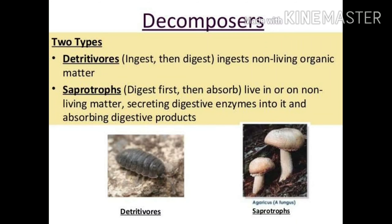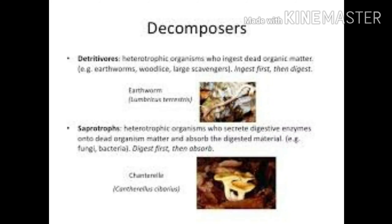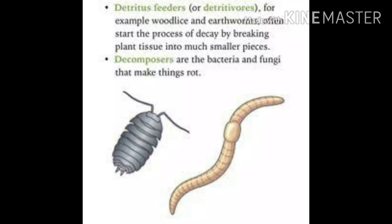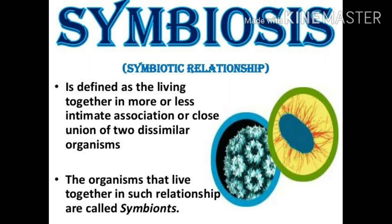Next are the decomposers, which are of two types: saprotrophs and detritivores. Organisms that feed on detritus and decomposing organic material of living organisms are called detritivores. Saprotrophs are organisms that feed on dead organisms and products of living organisms. They do not ingest the whole food but rather absorb decomposed and digested food, unlike detritivores.